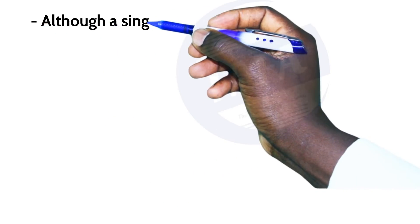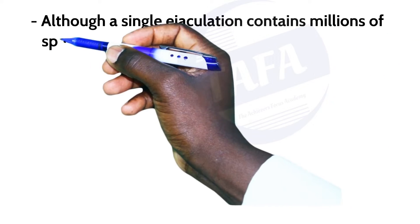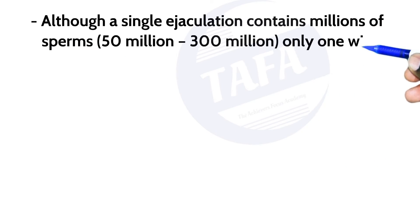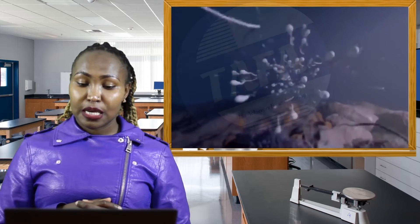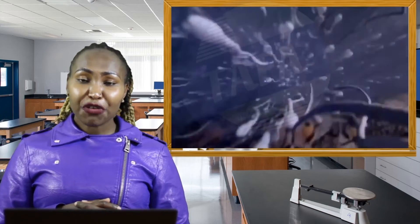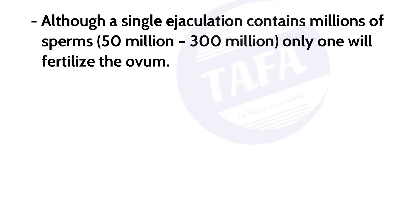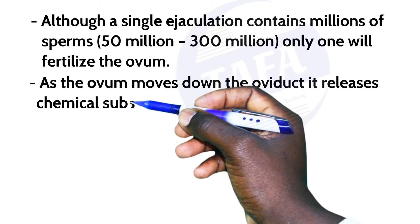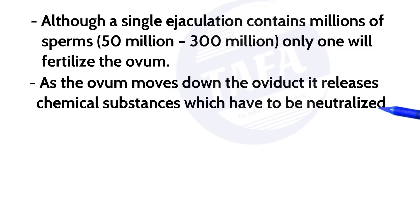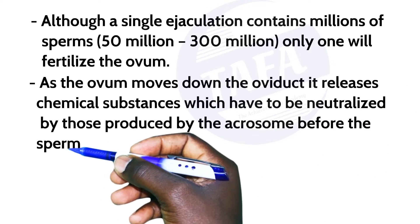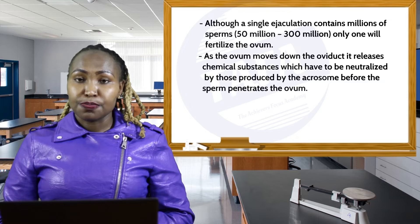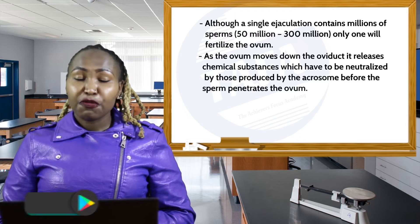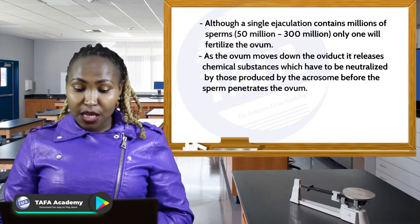A single ejaculation contains millions of sperm, technically around 50 to 300 million. However, only one of them fertilizes an ovum. As the ovum moves down the oviduct, it releases some chemicals which have to be neutralized by those produced by the acrosome before the sperm can penetrate the ovum.